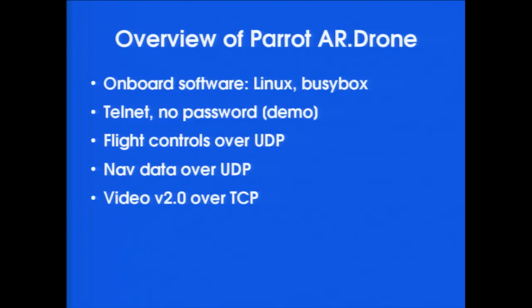On board, it's actually a Linux system running a lot of BusyBox utilities, and you can telnet right into it. There's no password — there is no security on this at all. If you wanted to hack into somebody's drone, all you'd need is a laptop. Please don't. The flight controls go over UDP; nav data also comes back over UDP. The video for the 2.0 drone comes over TCP. The original version 1 had its own little UDP thing, which I have not implemented and don't really intend to — if somebody else wants to do that, I'm all for it.